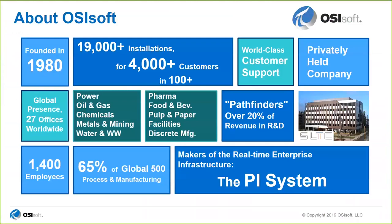A little bit about OSISoft: we were founded in 1980, and since then the company has grown quite a bit. We have a lot of different customers ranging from big companies to small companies, and we have a pretty powerful footprint in a lot of different industries — oil and gas, power, chemicals, metal and mining, pharma, and food and beverage.